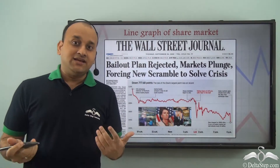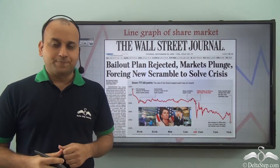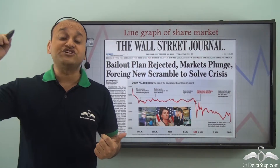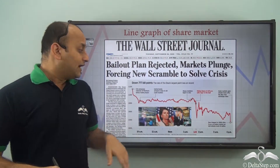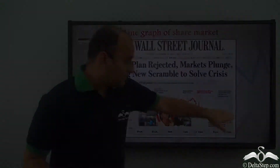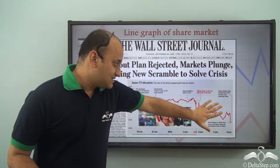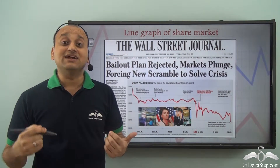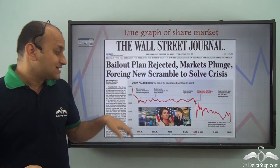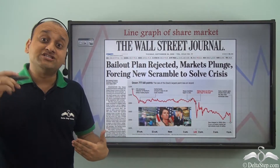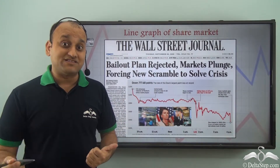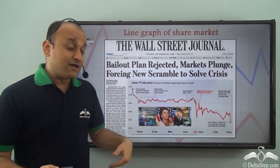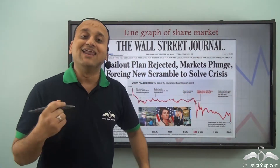You must have seen a line graph in a newspaper. If you go to the business section, you will see graphs that show the values of the share market over time. Now why is share market data represented in the form of a line graph? That's because this data is changing over time. Trend over time is best represented by a line graph, and that's why in the business section, the share market will always be shown as a line graph.